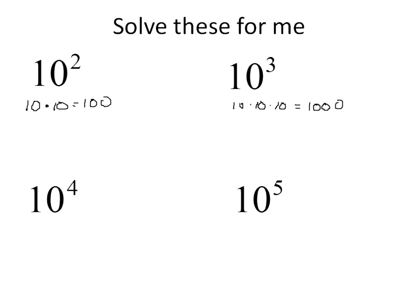10 times 10 times 10 is 1,000. 10 to the power of 4 is like saying 10 times 10 times 10 times 10, which is 10,000. And 10 to the power of 5 would be 10 times 10 times 10 times 10 times 10 — five times — which would be 100,000.